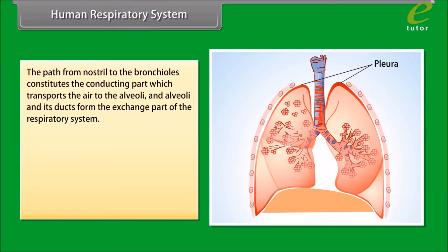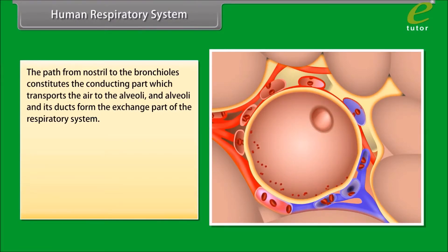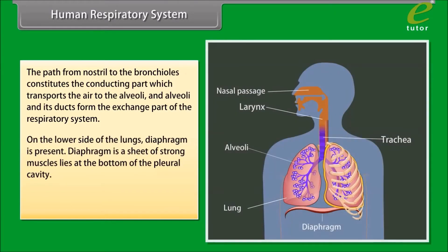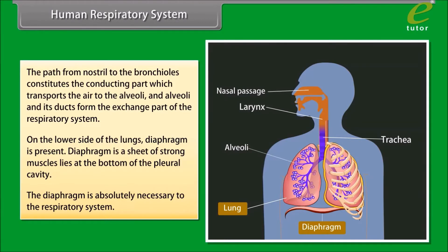The path from the nostril to the bronchioles constitutes the conducting part, which transports air to the alveoli. The alveoli and their ducts form the exchange part of the respiratory system. On the lower side of the lungs, the diaphragm is present — a sheet of strong muscles at the bottom of the pleural cavity that is absolutely necessary to the respiratory system.